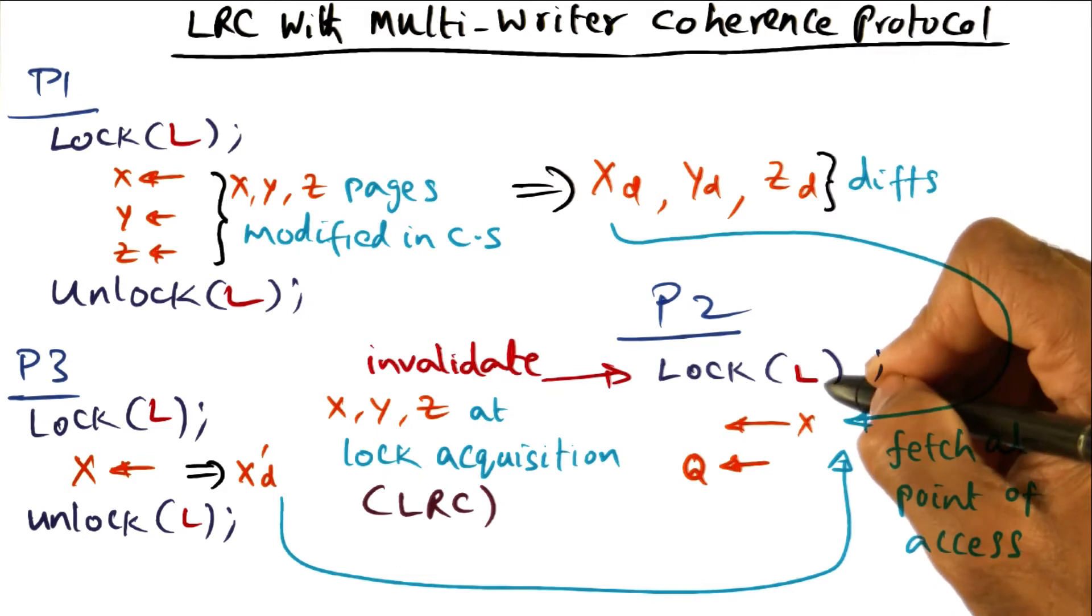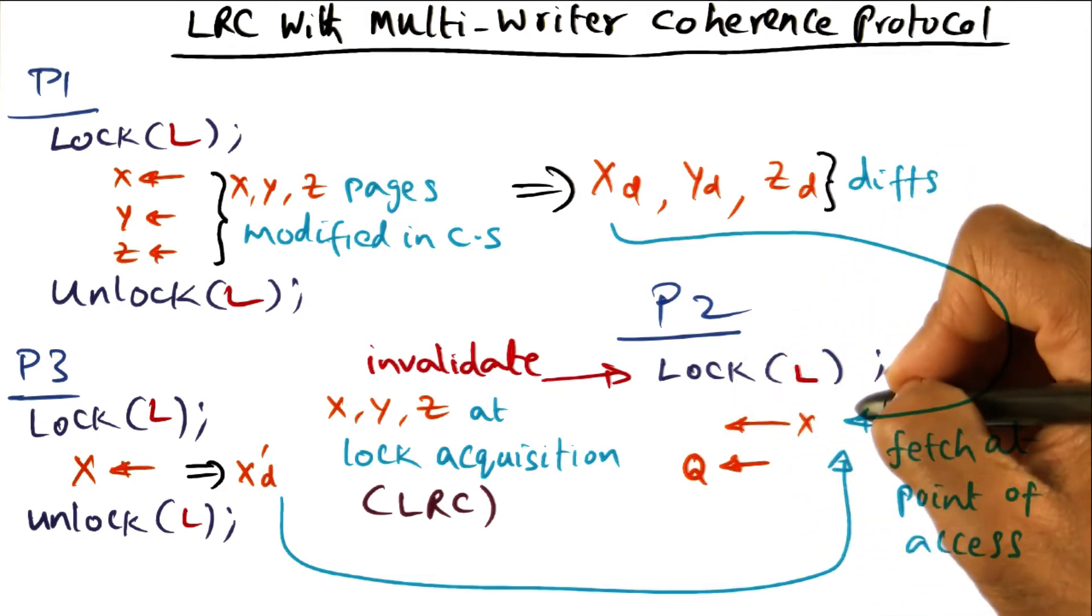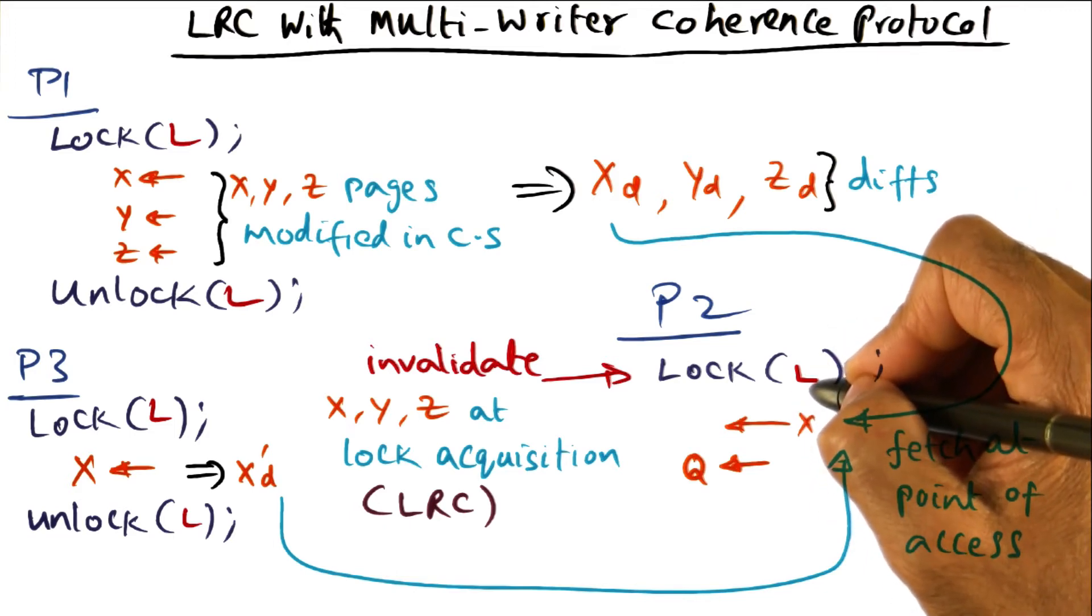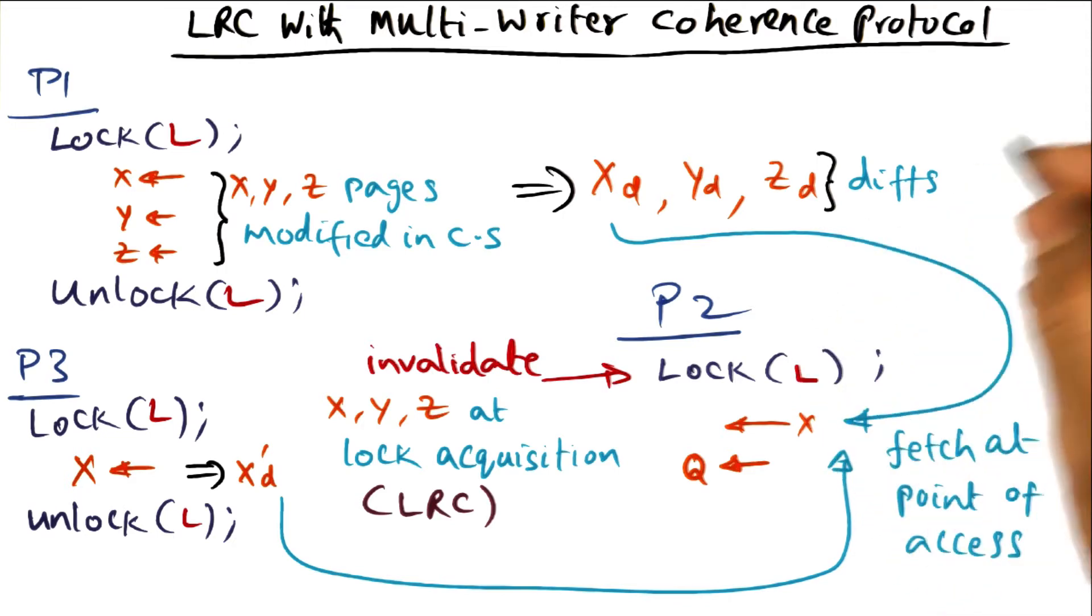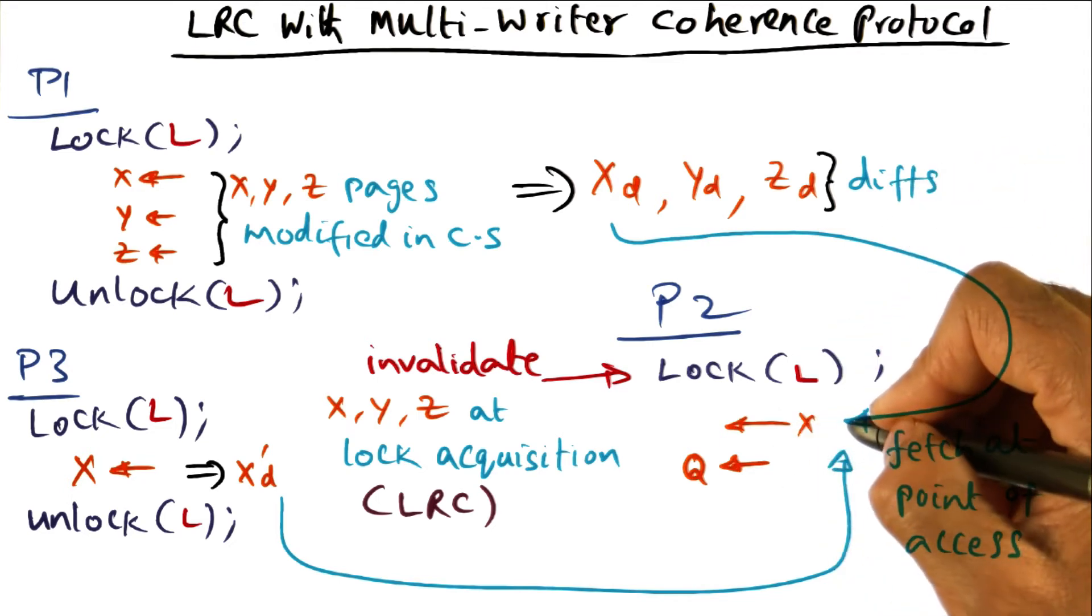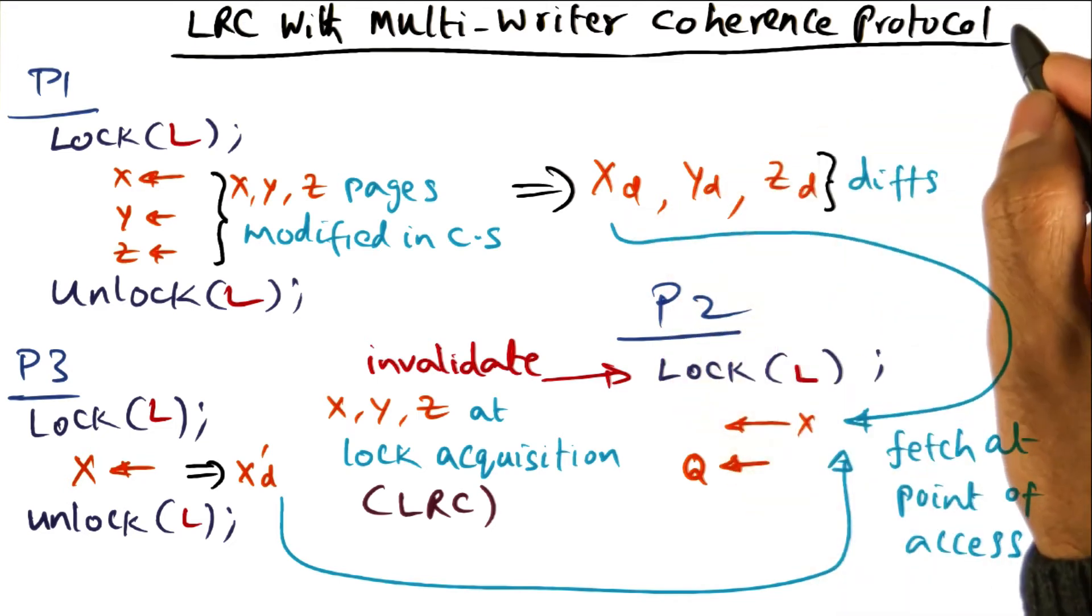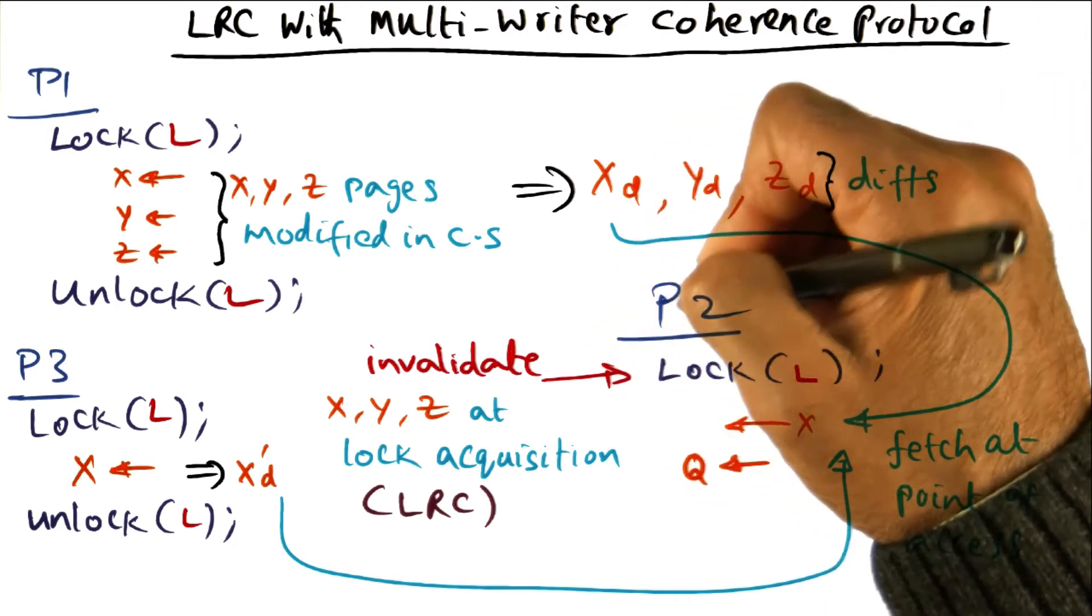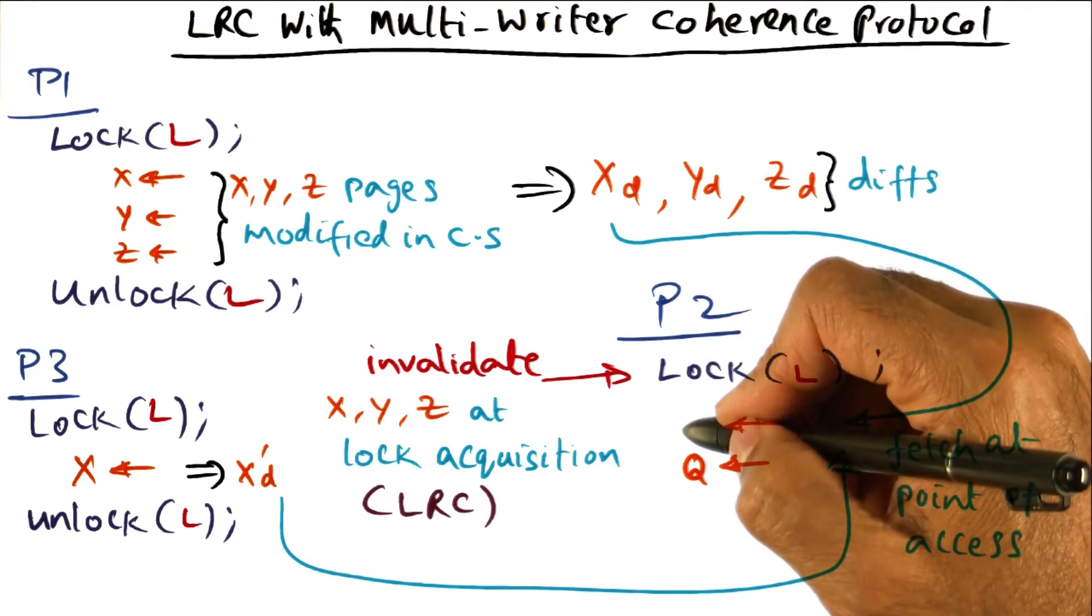When P2 gets its lock L, the DSM software is going to bring the diffs only from the previous users of the same lock L. P4 was not using L, it was using L2 even though it accesses the same page. It's modifying a different portion of that page and therefore DSM software is going to assume that change made by P4 to x is not relevant so far as P2's critical section is concerned.